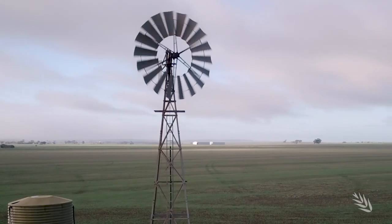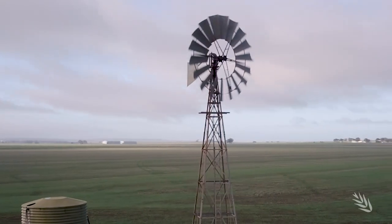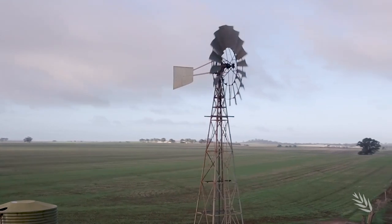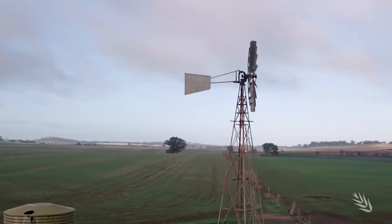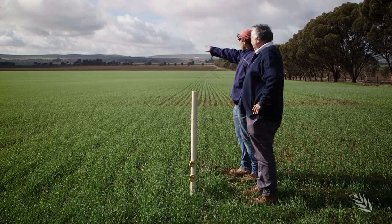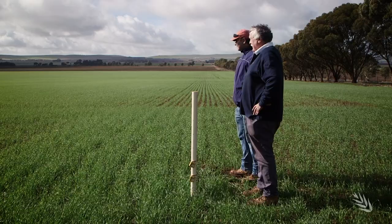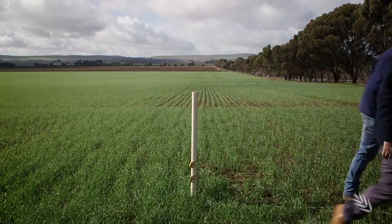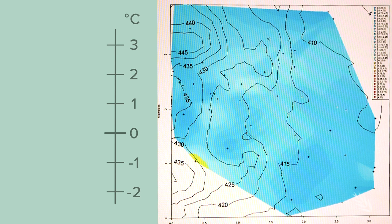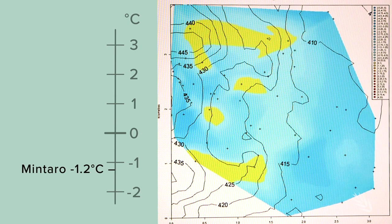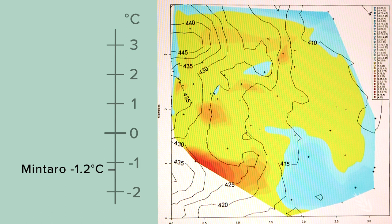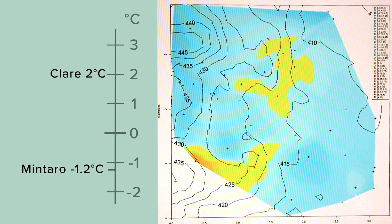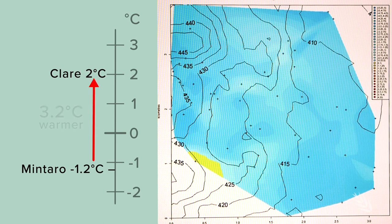This also highlighted the difference between on-farm weather observations compared to a district observation, which grain growers normally rely on. Here in Mintaro in the mid north of South Australia, the nearest Bureau of Meteorology weather station is about 15 kilometres away and is over a range of hills, so it really doesn't tell a farmer what happened on their property that night. The overnight minimum at the Mintaro trial site was minus 1.2 degrees, while over the hills at Clare the Bureau's weather station recorded an overnight low of 2 degrees — just over 3 degrees warmer.